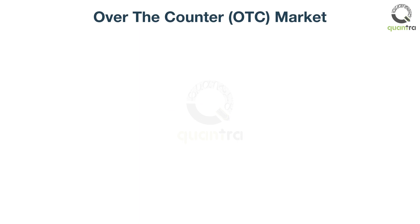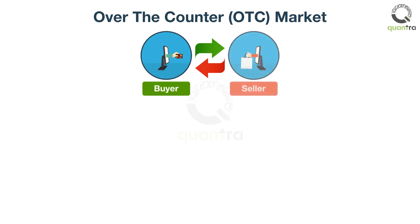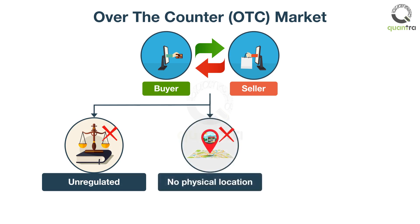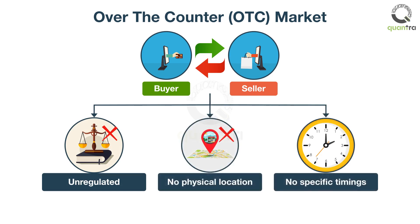In contrast to the exchange-traded market, the over-the-counter market is a market where transactions happen between buyers and sellers directly without any central entity. As a result, it is an unregulated market. It does not have any physical location, and transactions can happen anytime.